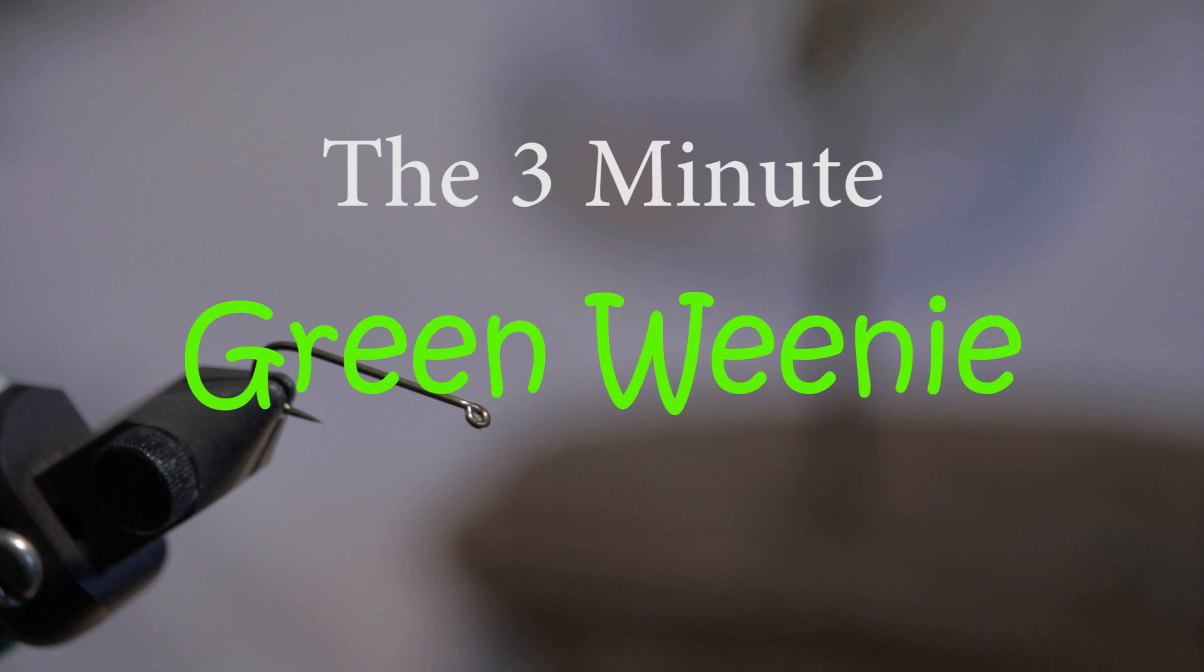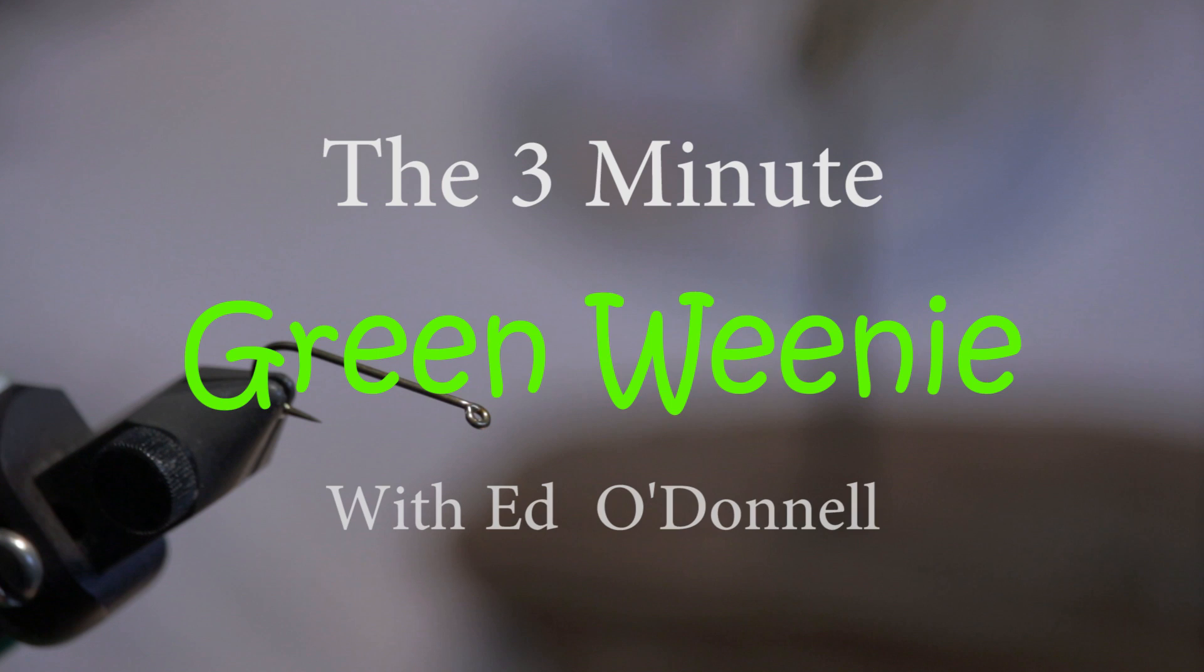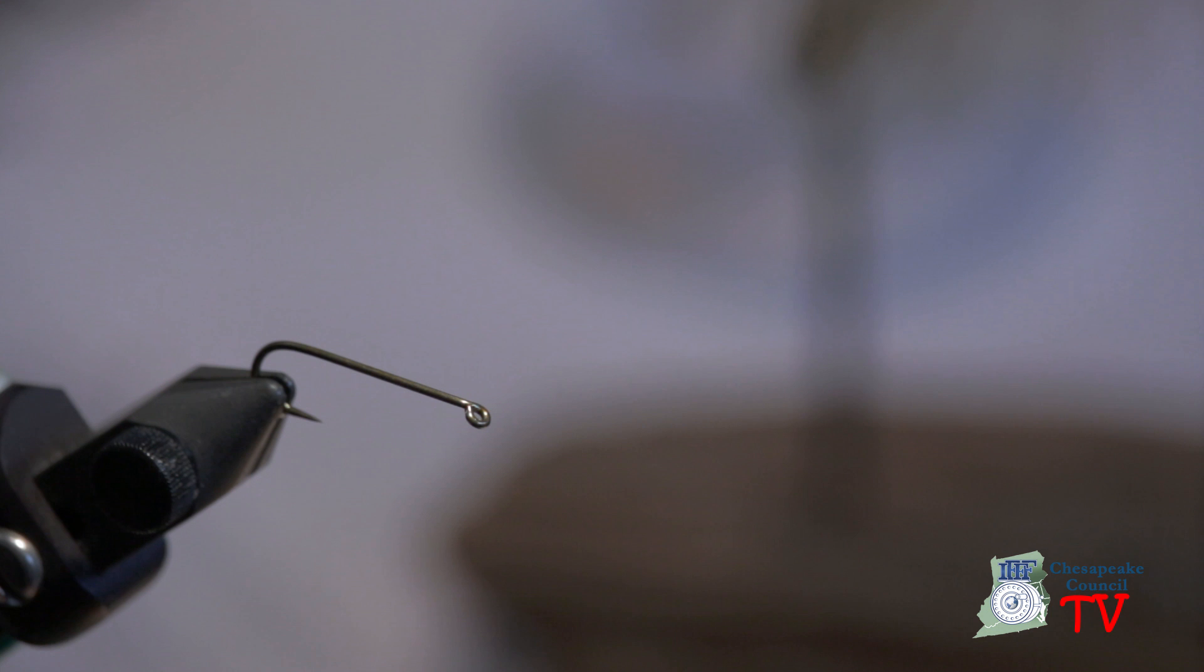Also, Charlie Mech picked it up in his 1989 book on Pennsylvania hatches. The way we're going to do it is the Charlie Mech style. It's going to be weighted up towards the front. The hook I'm using is an R74-9672. I'm using just plain fluorescent green chenille, and I'm using basically ultra-thread in olive. And here we go.